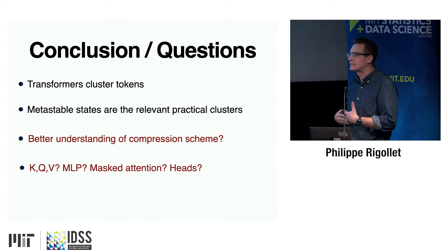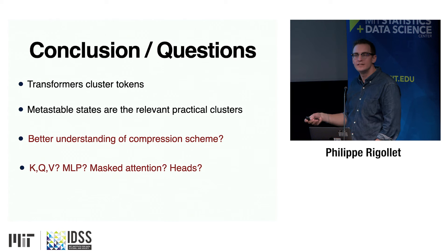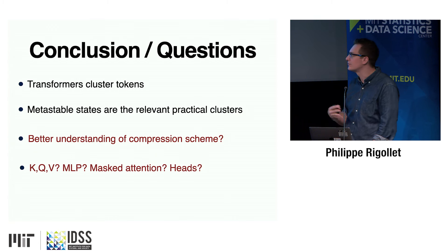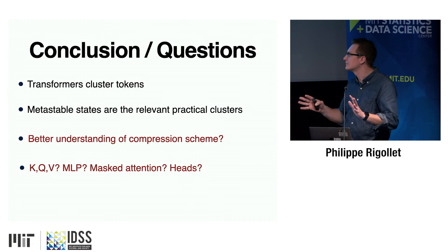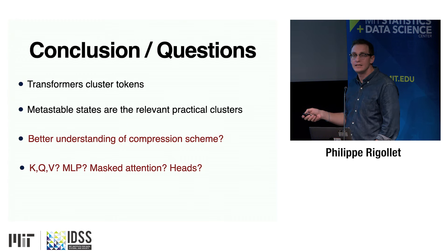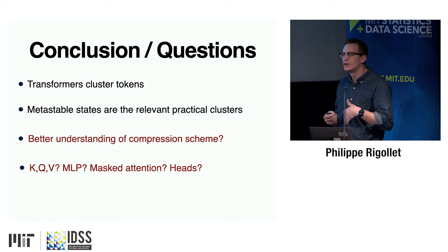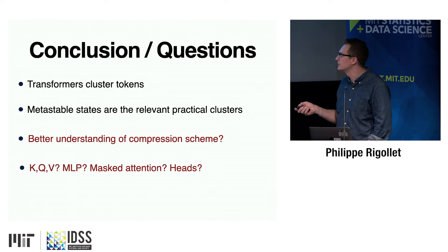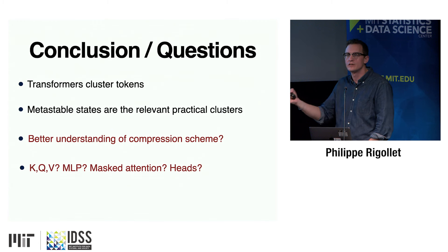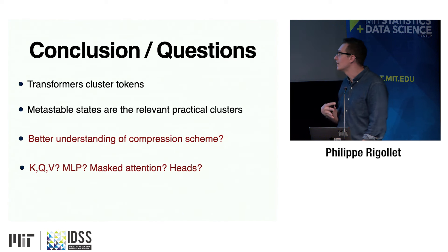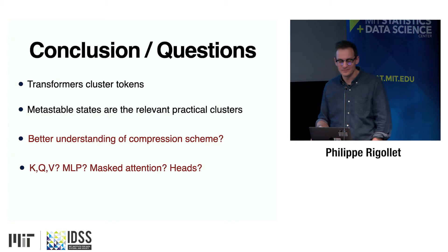To conclude: my main message is that transformers cluster tokens. The metastable states — which we spend most of our math proving eventually collapse to a single cluster asymptotically, but in exponential time — are very important and need to be studied. I'd like a better understanding of this compression scheme: showing entropy grows is good, but I'd like to know if there's a better notion of entropy this thing is maximizing. Open questions include: adding multiple K, Q, V matrices; the effect of MLP layers; decoder transformers with masked attention (what ChatGPT does); and the effect of multiple heads. Thank you.